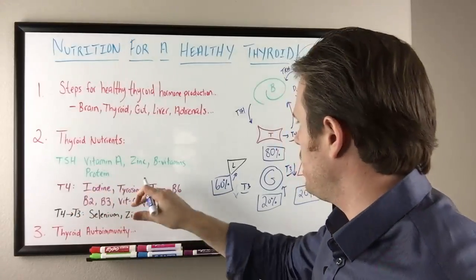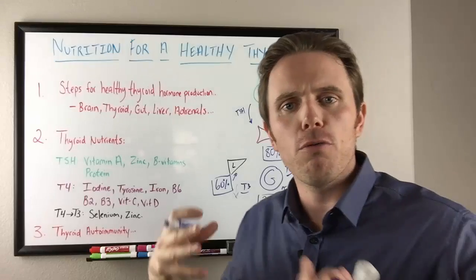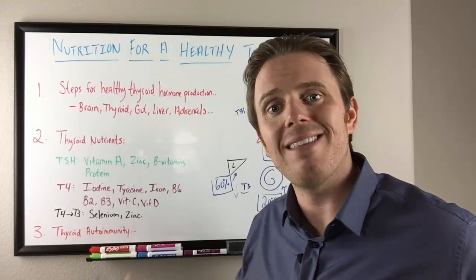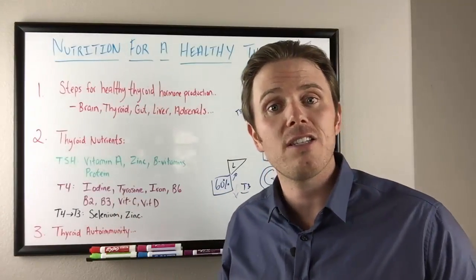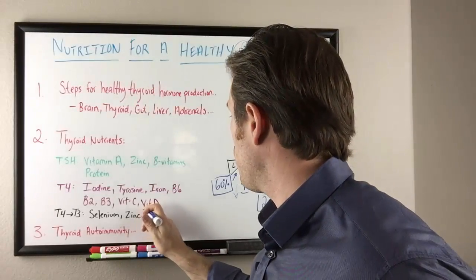So iodine, tyrosine, iron, B6. Your B vitamins are really important for energy, for making the Krebs cycle go round. I did a video on the mitochondria recently. Take a look at that video to get more info on B vitamins. Vitamin C is a really important antioxidant and helps the adrenals as well.